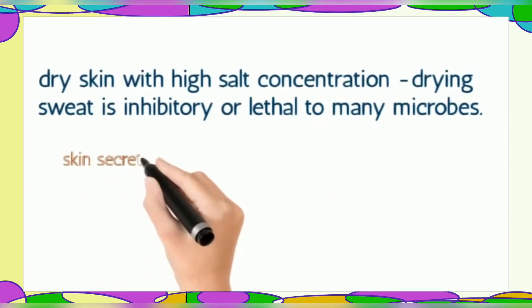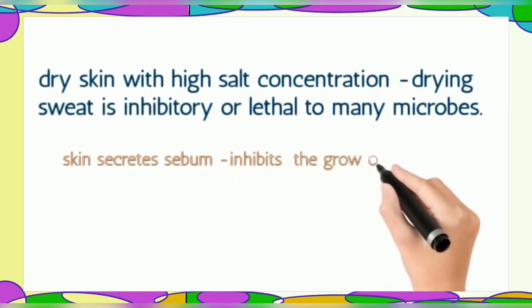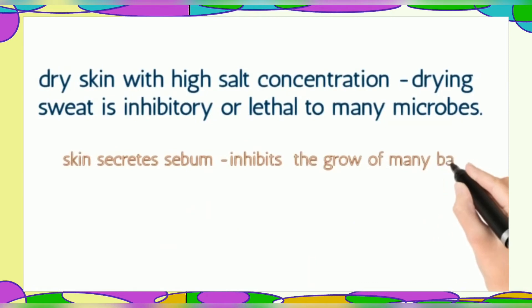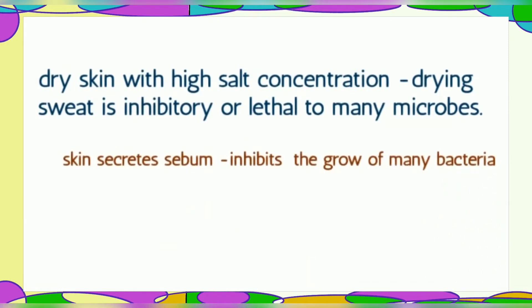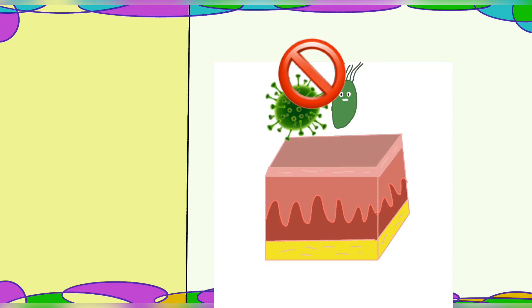Relatively dry skin with high salt concentration in drying sweat is inhibitory or lethal to many microbes. Skin secretes sebum, which inhibits the growth of many microorganisms. Sebum contains lactic acid and fatty acids, and the skin pH level is around 3, which inhibits the growth of many bacteria.